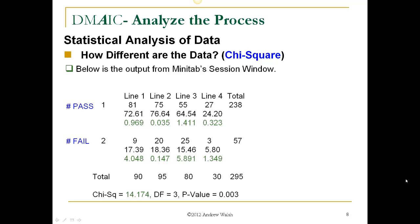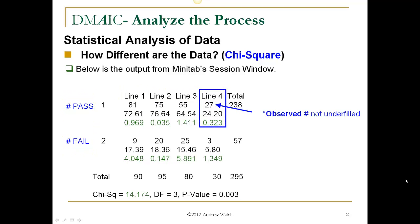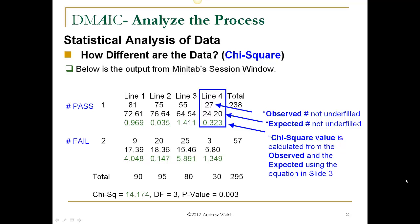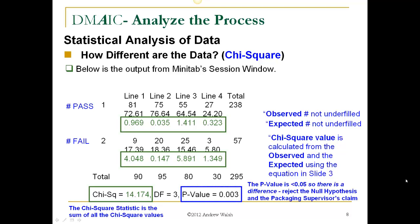Below is the output from the Minitab session window. We see our categorical variable of columns and rows, and looking at line four, we see the observed number not under-filled and then the expected number not under-filled. Minitab estimates the expected results based on the data that is input. The Chi-Square value is calculated from the observed and expected values using the formula. We take the sum of all Chi-Square values to arrive at the Chi-Square statistic, which is compared to the Chi-Square distribution, giving a p-value of .003. Since the p-value is less than .05, there is a difference — we reject the null hypothesis and the packaging supervisor's claim.